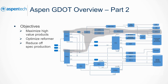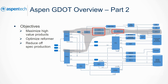GDOT can be used to optimize the production of aromatics. When using it for this purpose, GDOT will coordinate the crude distillation unit, the naphtha hydrotreater, the reformers, aromatic extractors, distillation and dealkylation units using a pseudo-component model, simplified reaction models, and shortcut distillation.